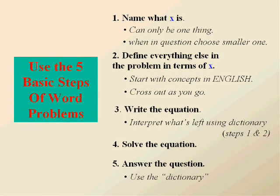Do you remember what the most commonly skipped step is? Step number one, name what they want to know. Name what x is. If you get baffled and you don't even know what you're looking for, of course you're going to have a problem. Recall that x can only be one thing. It can't be Susie and Jim's age. And when in question, usually let x be the smaller of the several things that are involved in the problem.